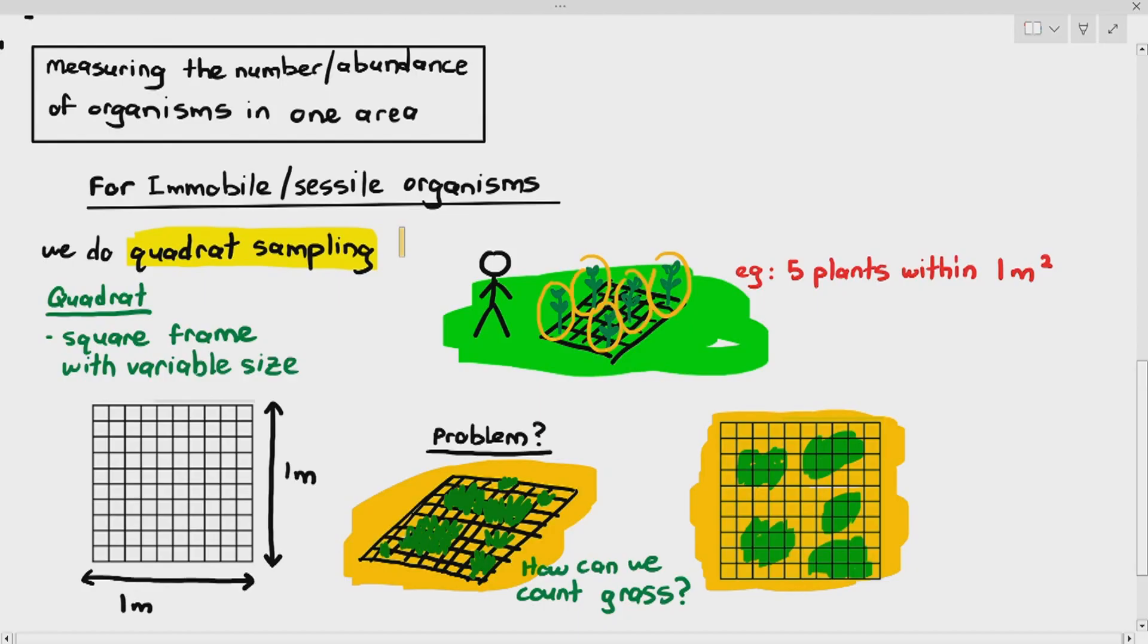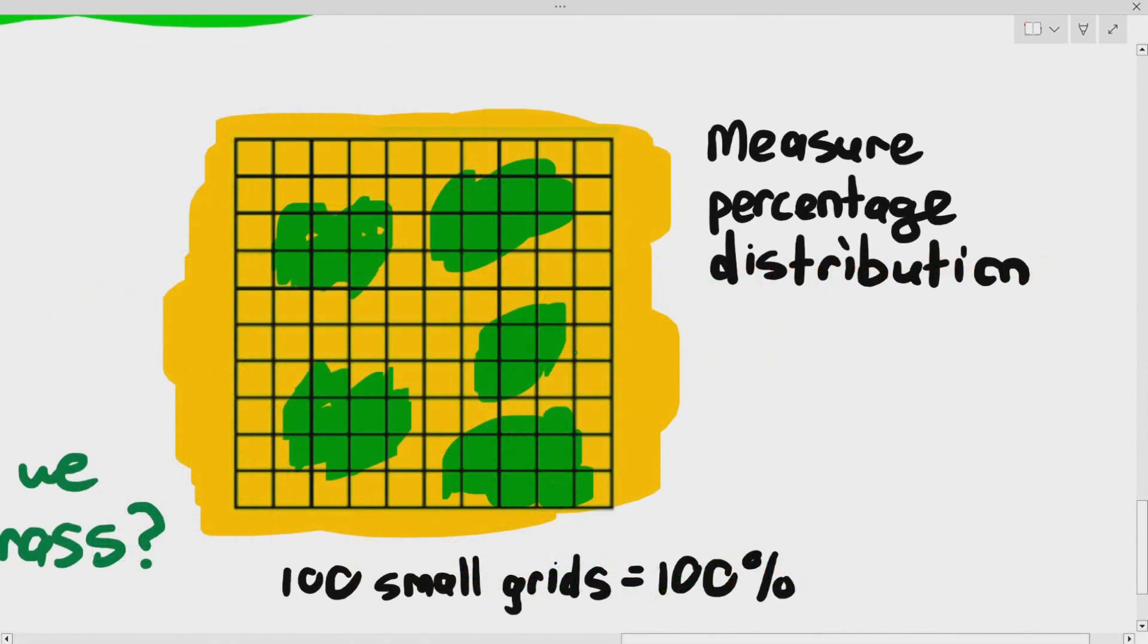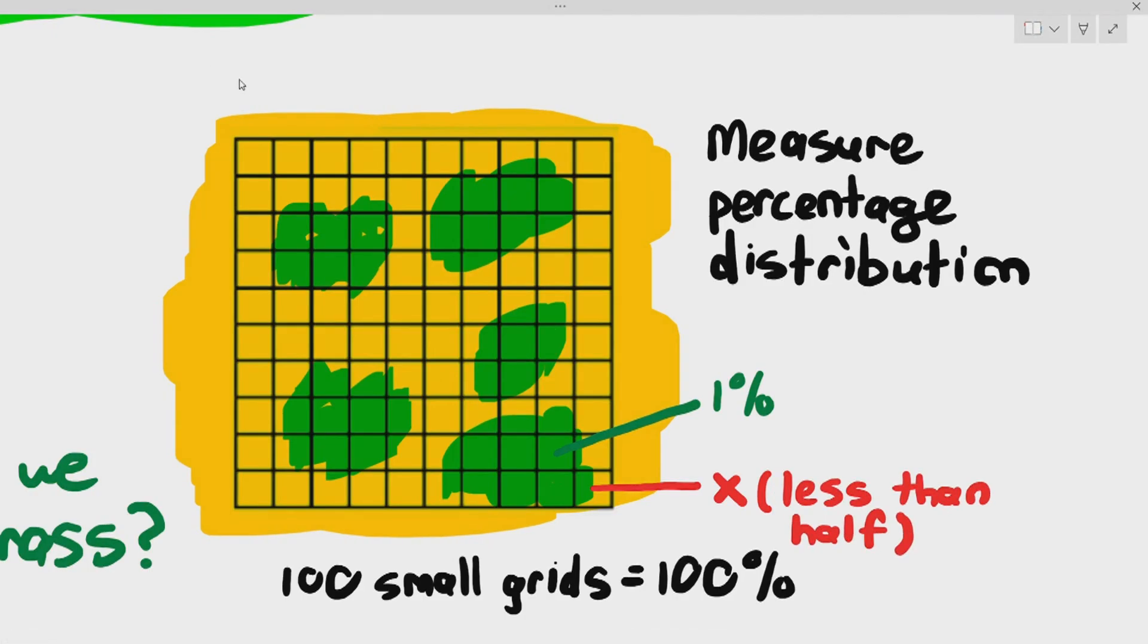You'll be there forever and you might get heat stroke doing that under the hot sun. So what you do is, instead of counting, the brown color represents the soil and the green color represents the grass. Instead of counting the grass individually, you will measure the percentage distribution. Out of the small grids here, the 100 small grids represent 100%, so one grid will represent 1%. If the grass encompasses one entire grid, it is 1%. If it covers less than half, you do not count it. If it is more than half, you count it as well.